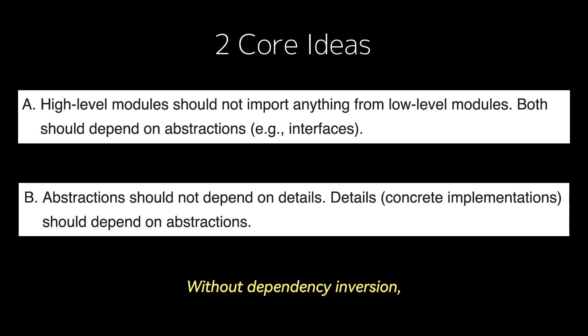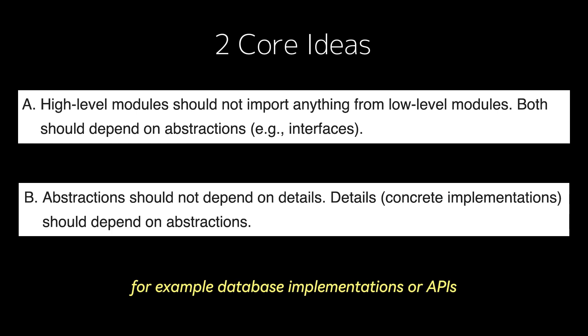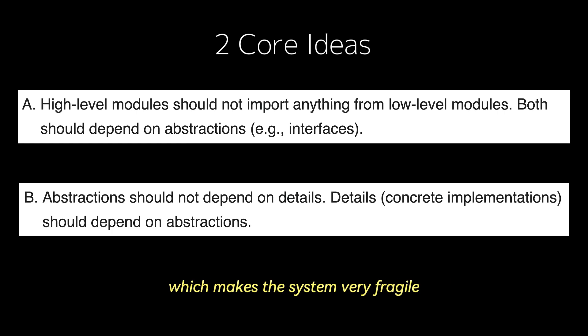Without dependency inversion, changes in low-level modules — for example, database implementations or APIs — can ripple up to high-level modules, which makes the system very fragile and harder to maintain.